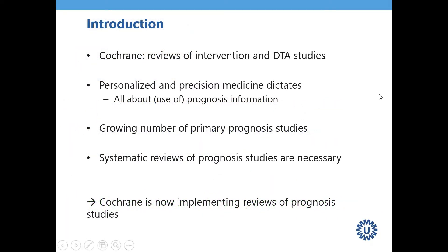This webinar has three parts. The first part introduces the ins and outs of the different steps in systematic reviews of prognosis studies. Then we continue with the different tools we have developed, where we can find them, and where we are. Finally, we discuss what is happening within Cochrane and how to do a systematic review within Cochrane. Each part will end with a Q&A.